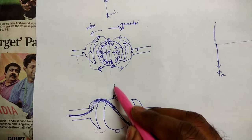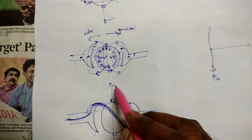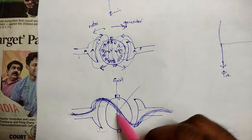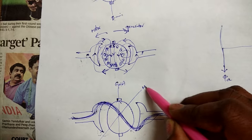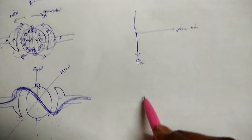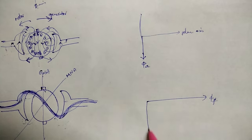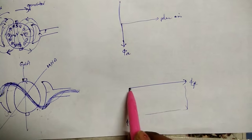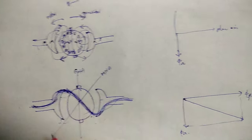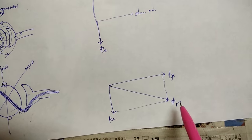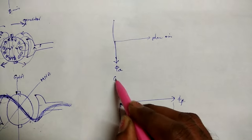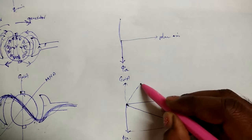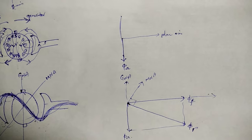GNA is along the brush axis and is always perpendicular to the polar axis. But MNA is always perpendicular to the resultant flux. Since the resultant flux is now distorted, MNA is perpendicular to this resultant flux and is shifted from the GNA. In the phasor diagram, phi-F is in one direction, phi-A is perpendicular to it, and the resultant phi-R is the vector sum of the two. GNA remains perpendicular to the polar axis, while MNA is now perpendicular to phi-R.